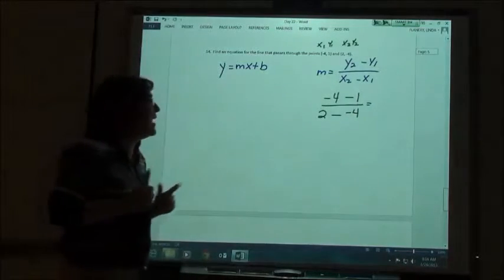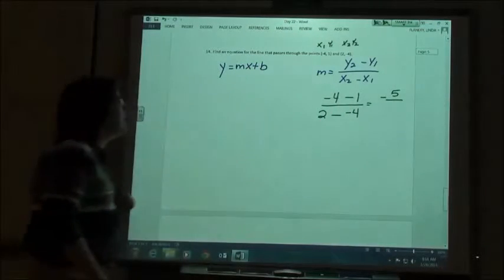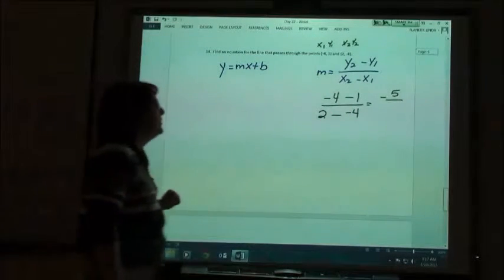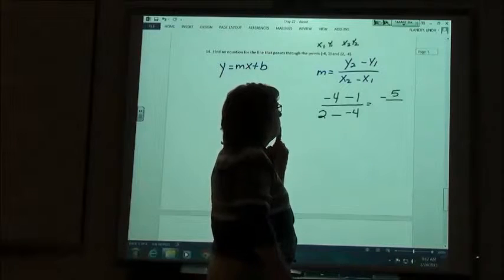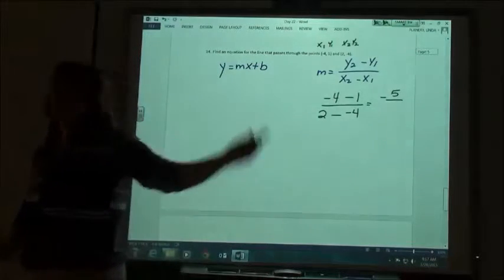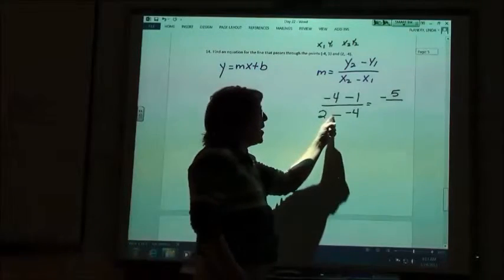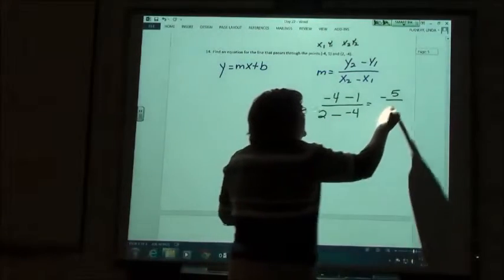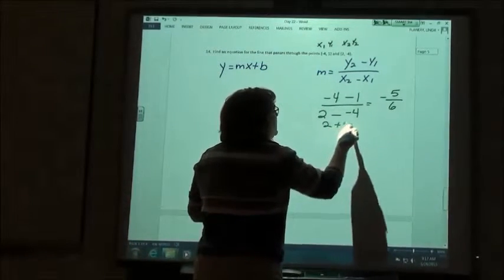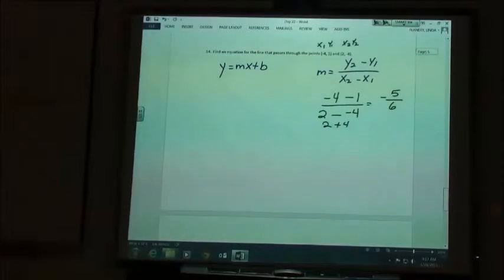Okay, so when we take negative 4 minus 1, we get negative 5. And when we do 2 minus a negative 4, we get 6. You get 6 because minus a negative, we change to a plus. So, that makes that 2 plus 4, which is 6. So, all that work, we found our m. It was a whole lot easier to count. But, nope, they made us practice the formula.